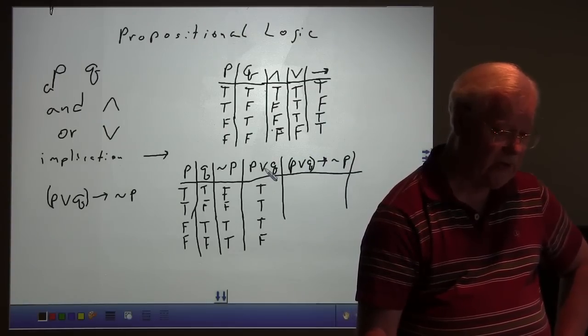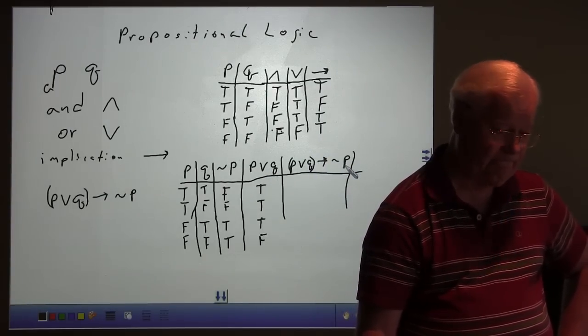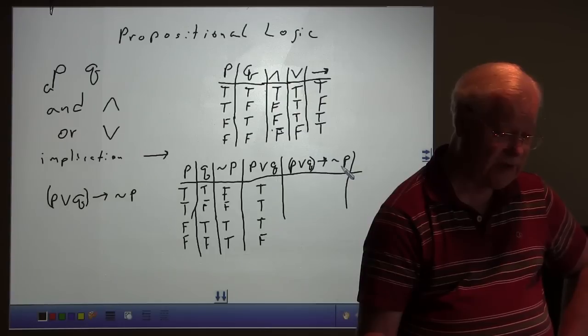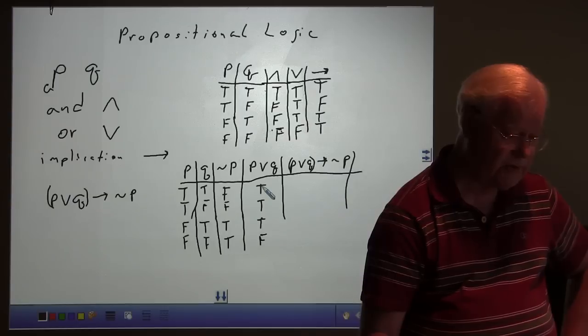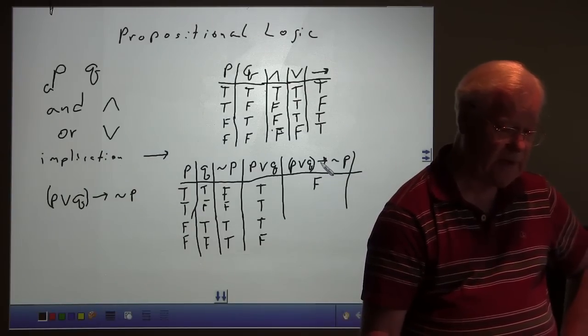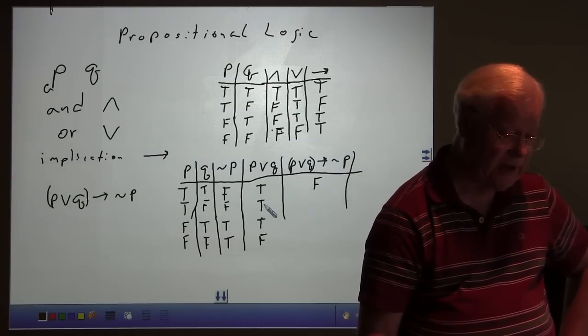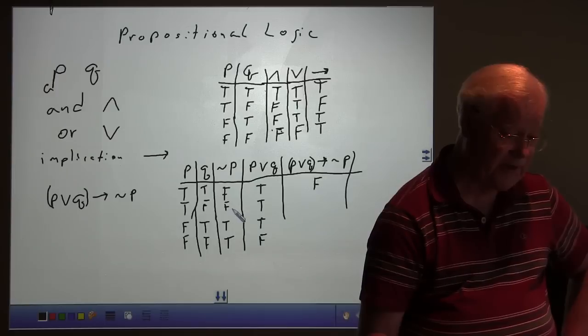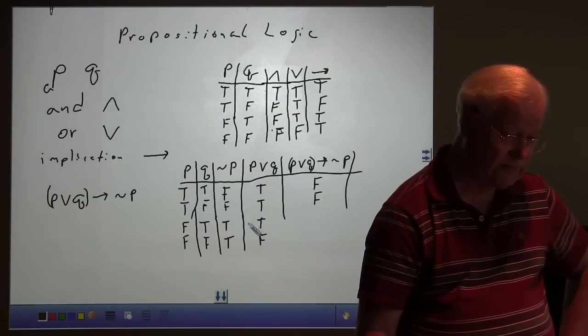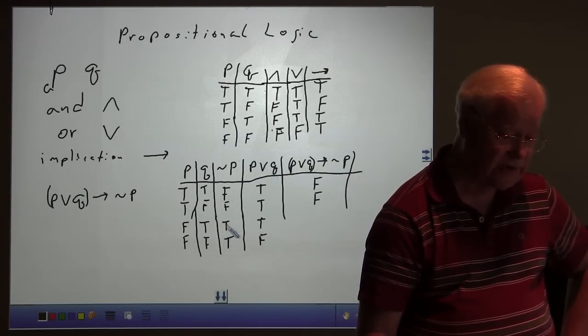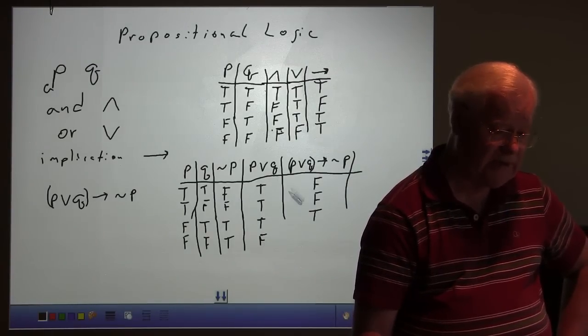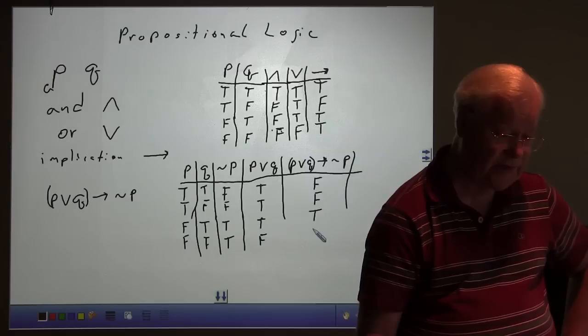What about P or Q implies not P? The first thing I want to look at is where P or Q is true, and if not P is also true, then we have a true statement. Here it's true, but not P is false. So this is going to be false because that's a true antecedent implying a false conclusion. P or Q is true, but not P is false. So the implication is false again. We have P or Q true, and the conclusion is also true, so that is true. And in the last statement, we have P or Q false, but remember, when the antecedent is false, then the whole thing is considered true.